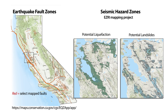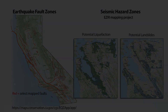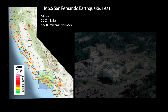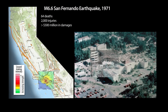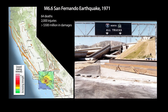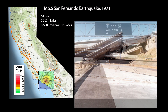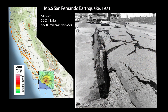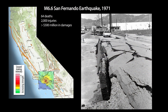These maps are the result of lessons learned from previous earthquakes. The deadly magnitude 6.6 San Fernando earthquake of 1971 caused 64 deaths, 2,000 injuries, and more than $500 million in damages. Buildings that were constructed on top of the active fault suffered severe damage when the fault moved.